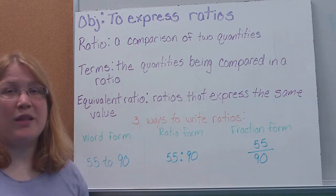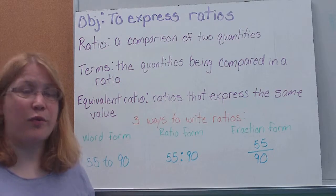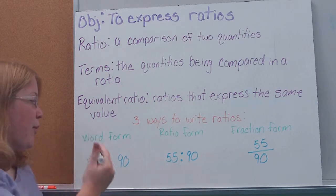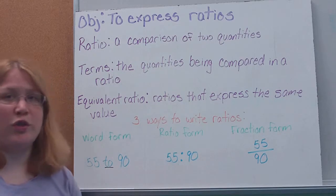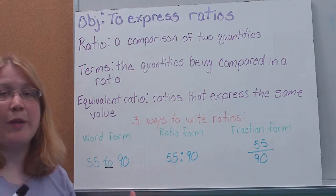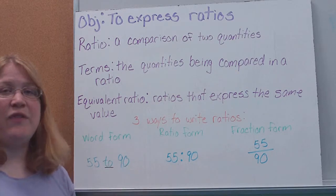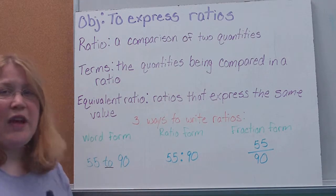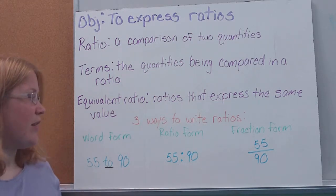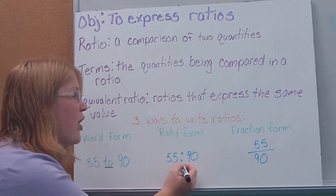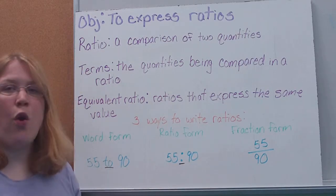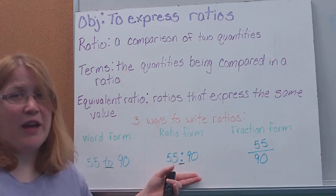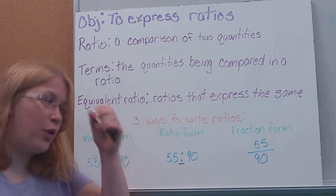What I've given you are the three different ways that we can write our ratios. There's a word form. Here you'll notice I've just used the same numbers. I'm using the word 'to' to combine and compare my two numbers. So I have 55 to 90. I haven't told you what we're comparing. That's okay. That would be one way to write this ratio. We could also write it in what we call ratio form where we just use a colon. If I were reading this out loud, I would still read this 55 to 90. The colon is just the ratio form.